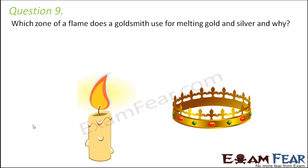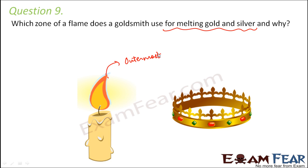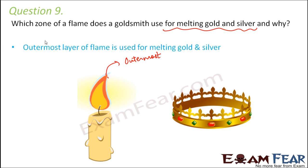Question number nine: which zone of a flame does a goldsmith use for melting gold and silver? For melting gold and silver, the goldsmith needs a lot of heat. The outermost zone is the hottest zone, also known as the non-luminous zone, and that is the zone used by goldsmiths.